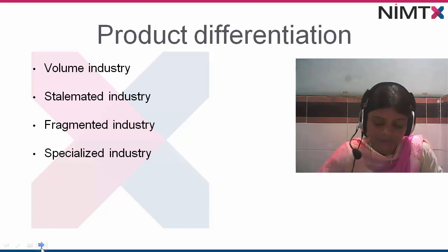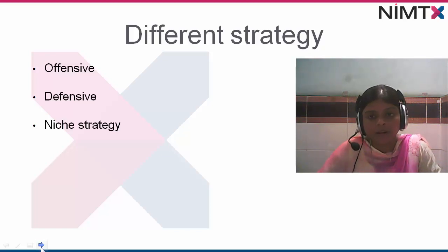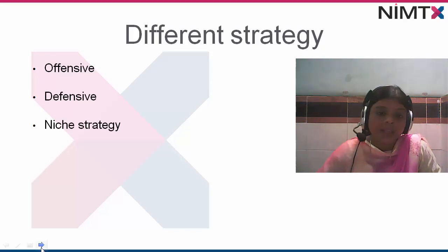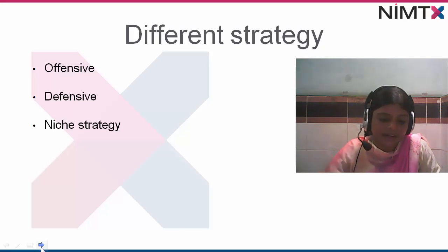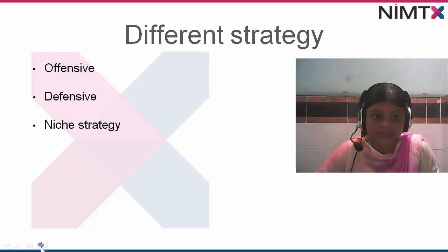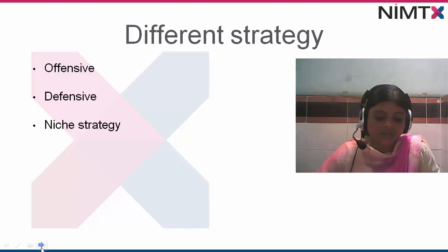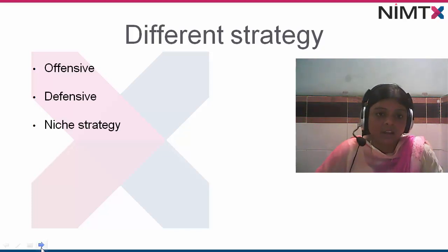When you are making a product and going to release it, you also need to make some strategies. There are basically two types of strategy adopted by the marketer: offensive and defensive. An offensive strategy is usually employed by the firm that is not presently the leader but aspires to a leadership position in the industry. It acts as a challenger and the leader is mostly its target. It tries to expand its market share and utilizes all the elements of the marketing mix in attacking the leader.